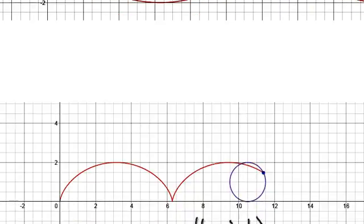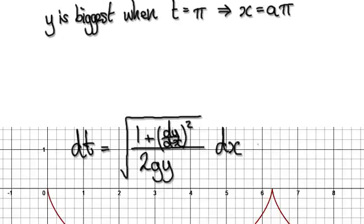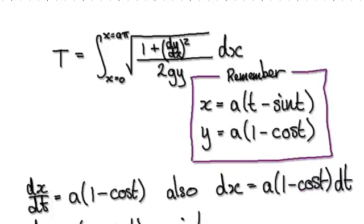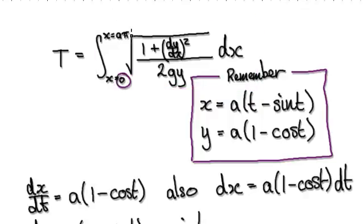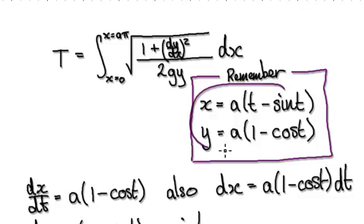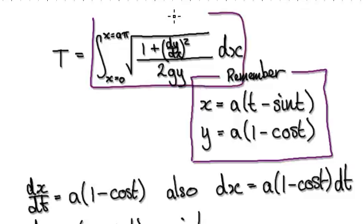Following on from the previous video, we got to this stage where the total time is given by evaluating this integral. We will need to evaluate it from x equals zero to x equals a pi. Remember the parametric equations for the cycloid are given by this, and we need to evaluate this integral.